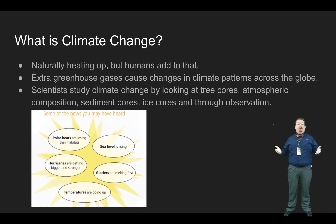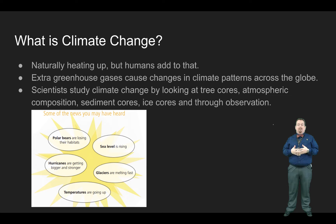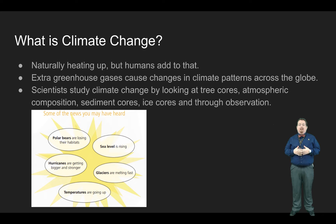So first off, just what is climate change? While we all agree that the earth is naturally increasing in temperature, human activity has increased that temperature at a higher rate, so it's getting hotter faster than it should be. The presence of greenhouse gases in the atmosphere cause changes in climate patterns across the globe. Scientists have been able to study climate change by looking at old tree cores, ice cores, atmospheric composition — what gases are in the atmosphere — sediment, and through general observation of what's happening today.